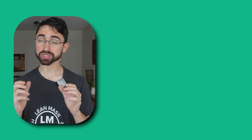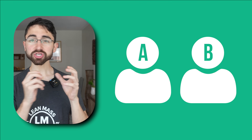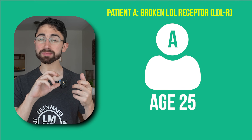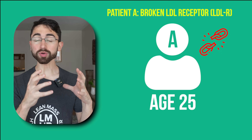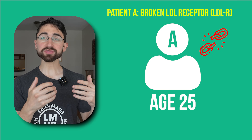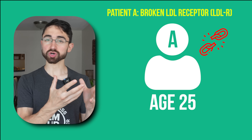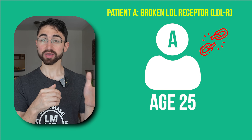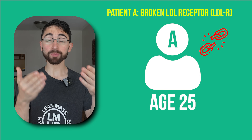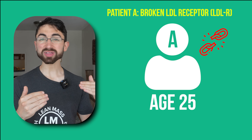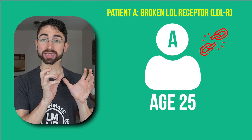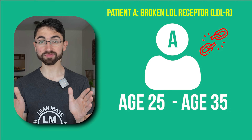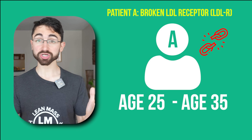Imagine you have two people, two patients — patient A and patient B. Patient A starts at 25 years old, and somehow you can snap your fingers and genetically manipulate this person so they have a broken LDL receptor. Effectively, you're giving them familial hypercholesterolemia — monogenic, one gene — familial hypercholesterolemia at age 25. Because they can't properly clear their LDL particles, their LDL is going to go through the roof. And let's say that person stays with those massively elevated LDL levels from age 25 to 35, and over that time, presumably, there's some plaque progression.